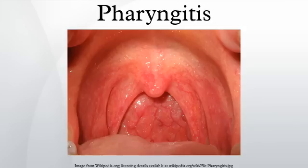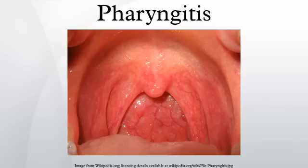If the inflammation includes tonsillitis, it is called pharyngotonsillitis. Another sub-classification is nasopharyngitis. The majority of cases are due to an infectious organism acquired from close contact with an infected individual. Viral infections comprise about 40–80% of all infectious cases and can be a feature of many different types of viral infections.